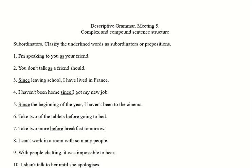The first example: 'I'm speaking to you as your friend.' After the word 'as' we have 'your friend,' which is a simple noun phrase. There is nothing to suggest that 'your friend' is a separate clause — it's just a noun phrase linked to the rest of the sentence by 'as,' which is working here as a preposition, simply linking a noun phrase to the rest of the sentence.